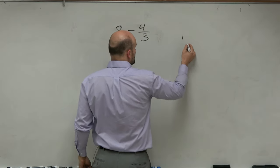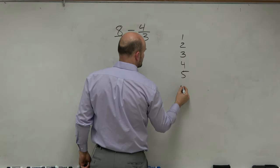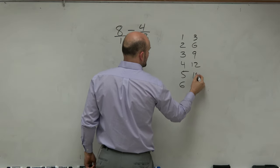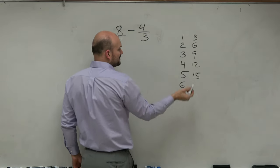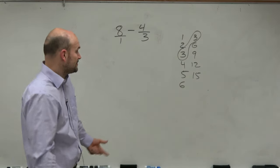So to do this, the slow method, you can just write out the multiples of 1 as well as the multiples of 3. So you can basically just count by 1's and count by 3's. And you recognize the smallest number or the smallest multiple that they share is going to be 3.